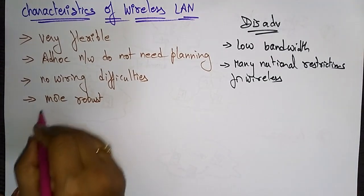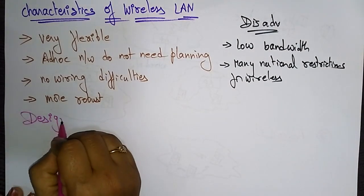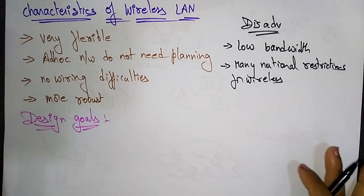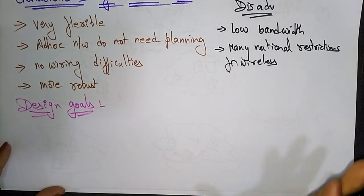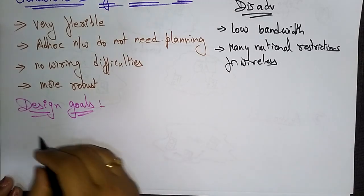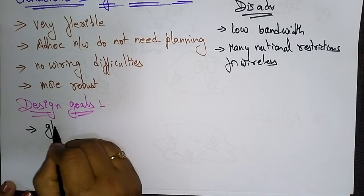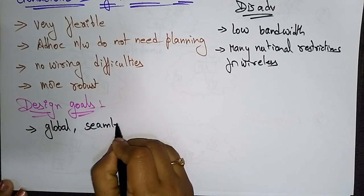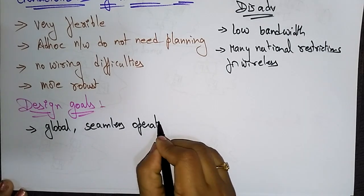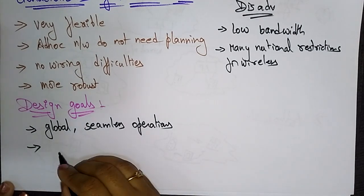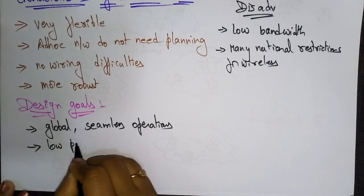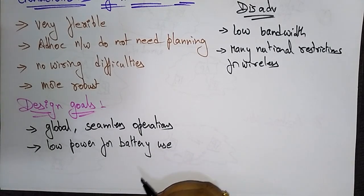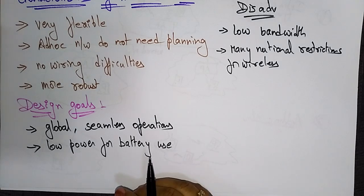Now let's see the design goals of the wireless LAN. The first goal is global seamless operations — the wireless local area network must be able to deal with global seamless operations. The next goal is low power for battery use, meaning power efficiency must be considered in the design.